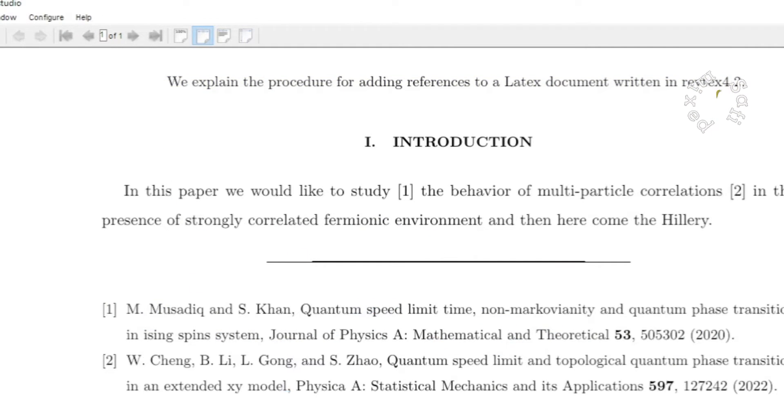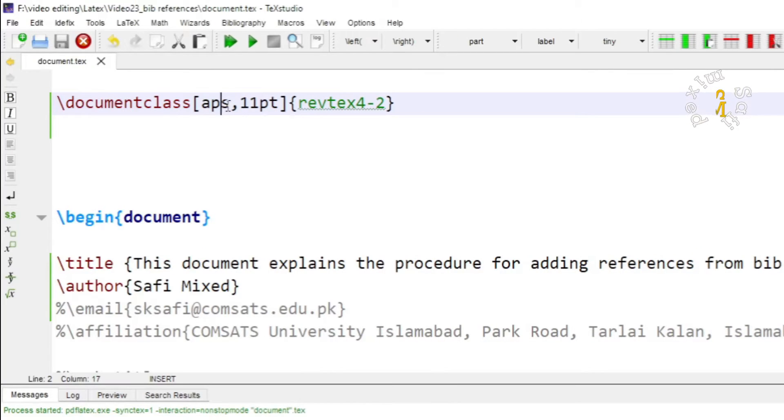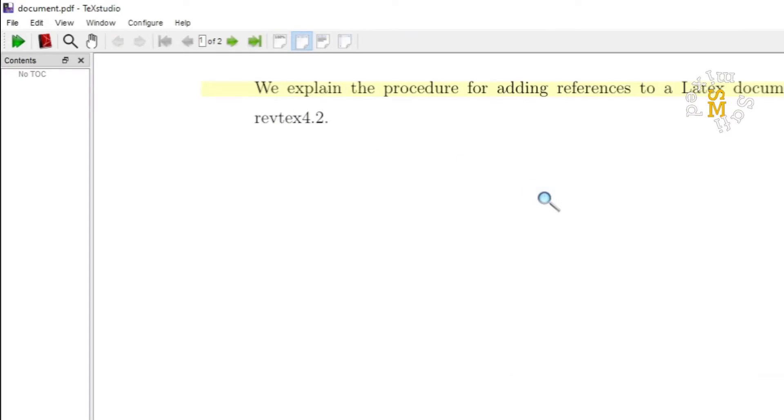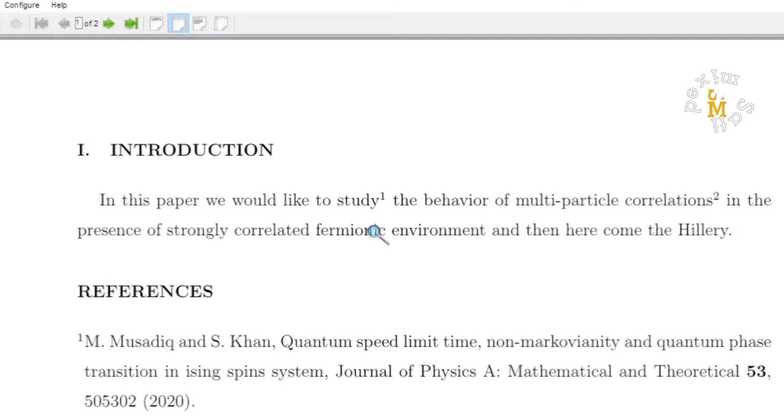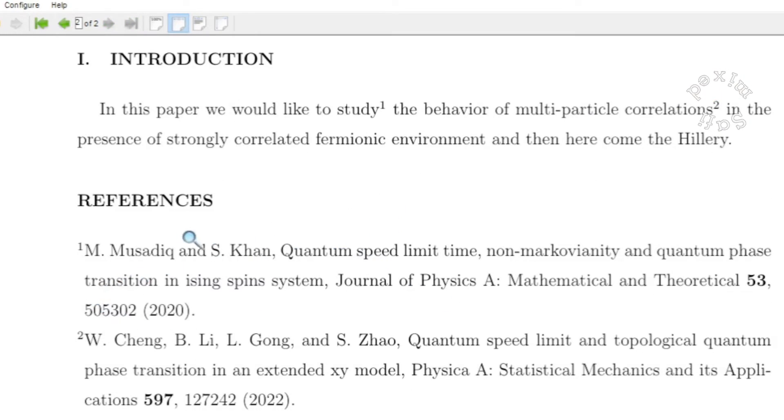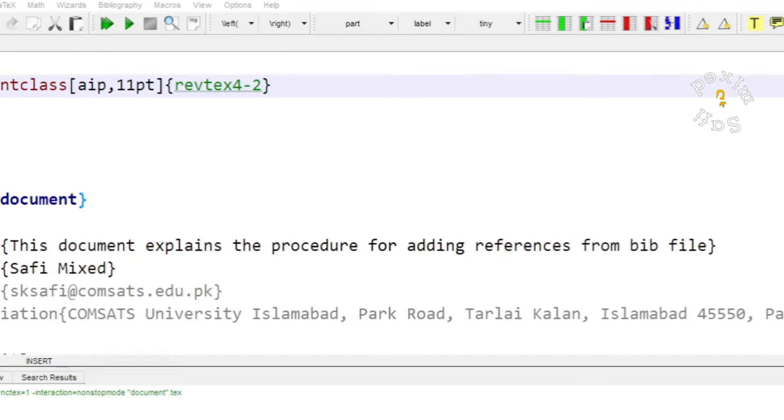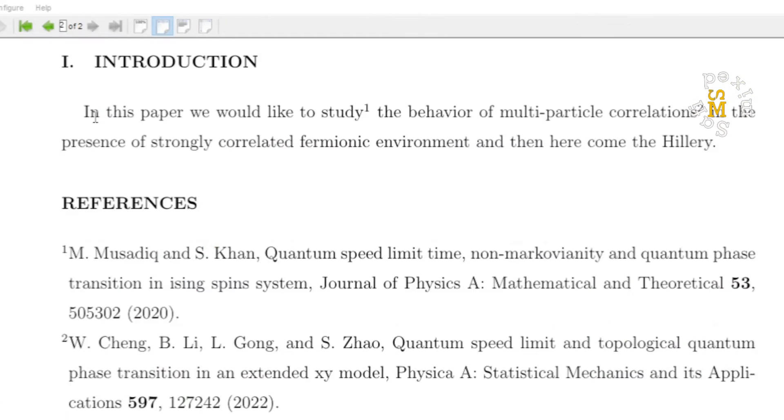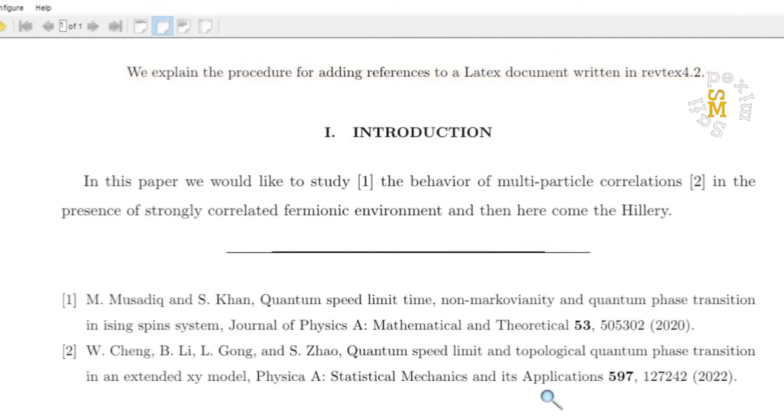And if I add instead of APS if I add AIP it will convert the citation style to AIP citation format. You see here now the references are put in the superscript of the text like 1 and 2 and here again the style has been changed. Similarly I can change this back to APS style and building the document will change again to APS style.